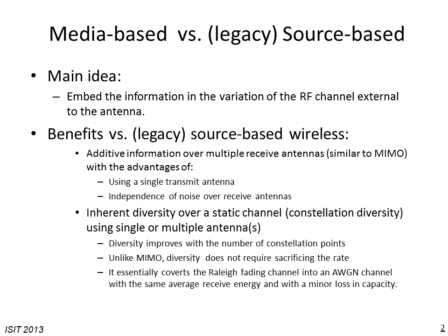One first benefit is that the information over multiple receive antennas will be additive. This is similar to MIMO, but we don't need to have multiple transmit antennas. The same identity of the information will be there even with a single transmit antenna. With a single transmit antenna and K receive antennas, we have an additional benefit compared to a K-by-K MIMO, because in a K-by-K MIMO the channel matrix is usually non-orthogonal, which results in dependency between the noise over the received dimensions.